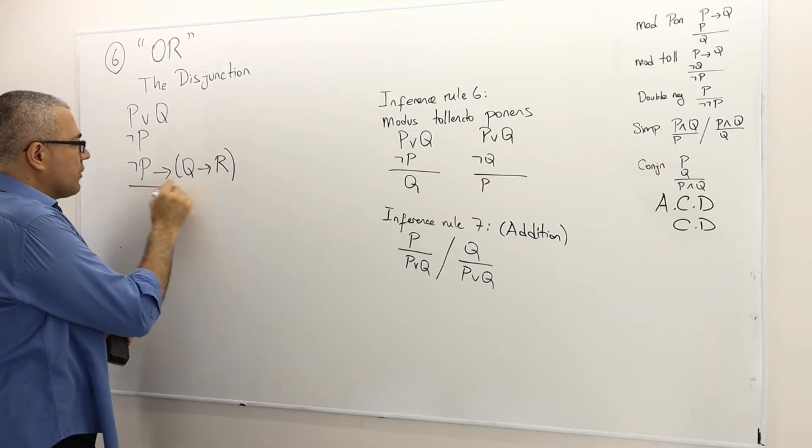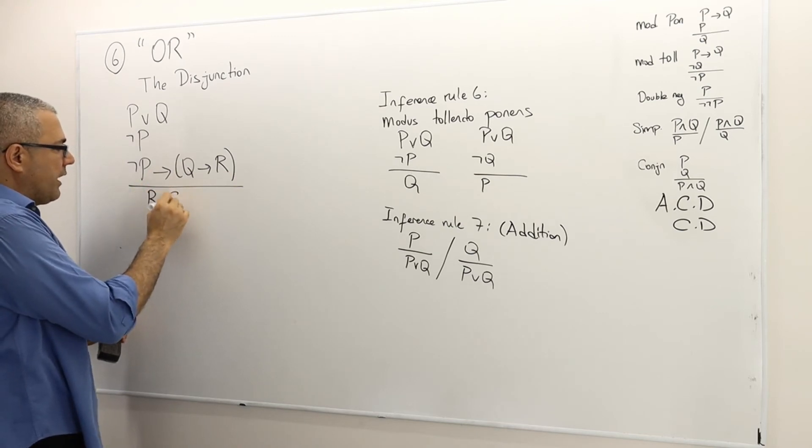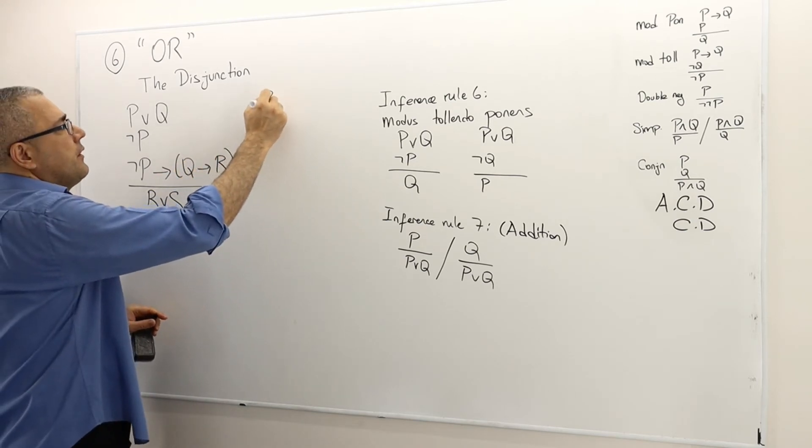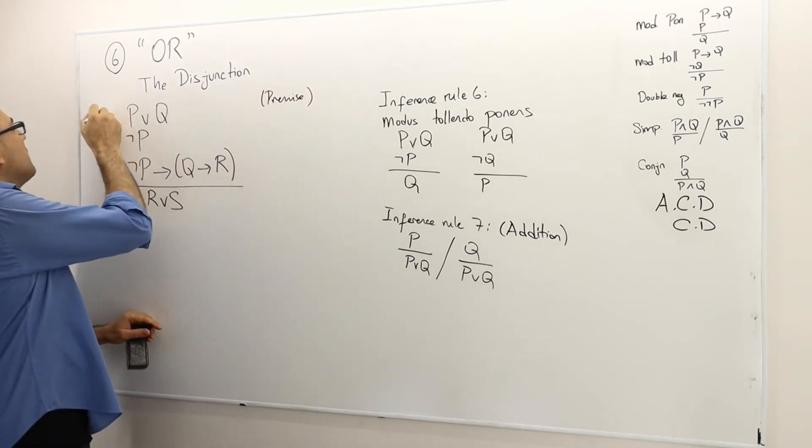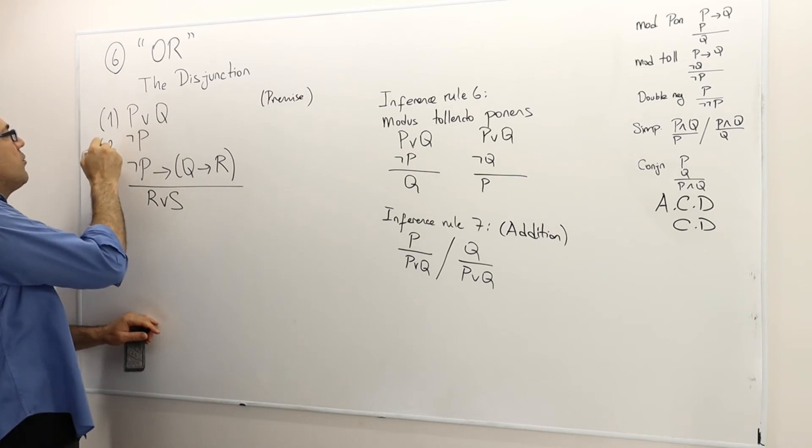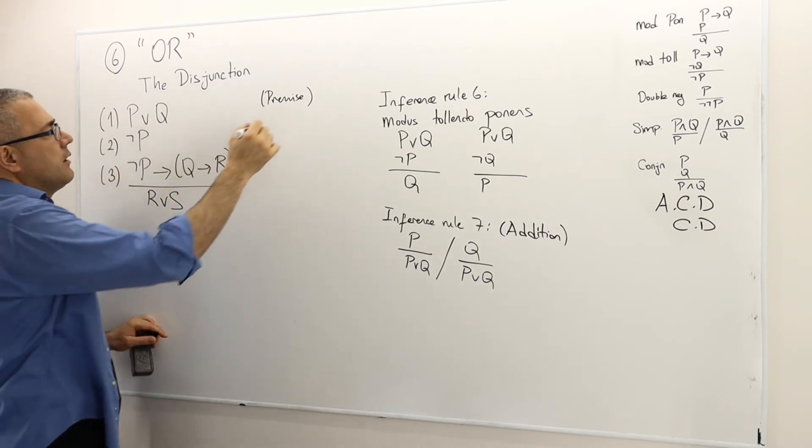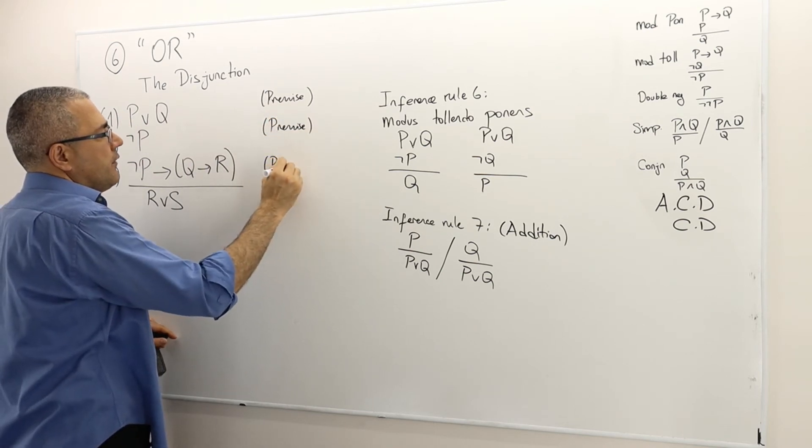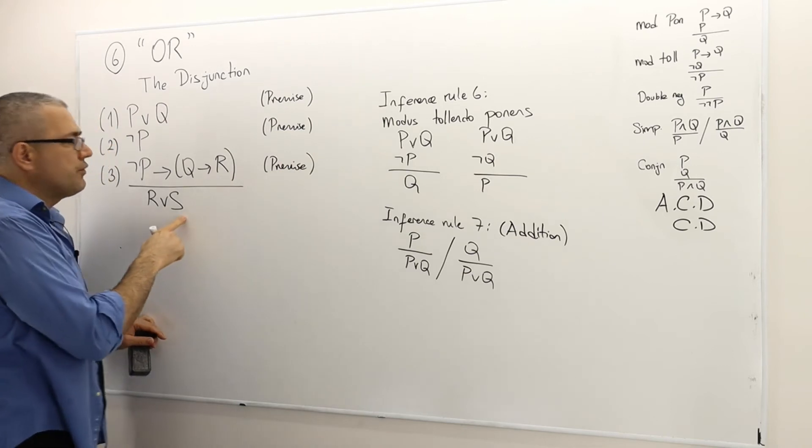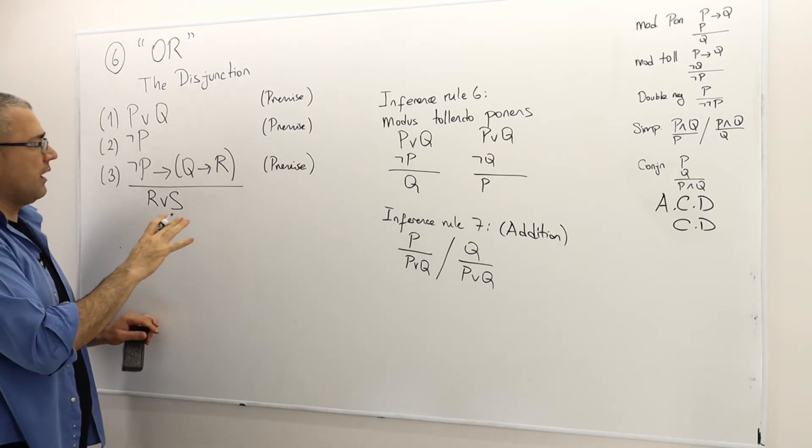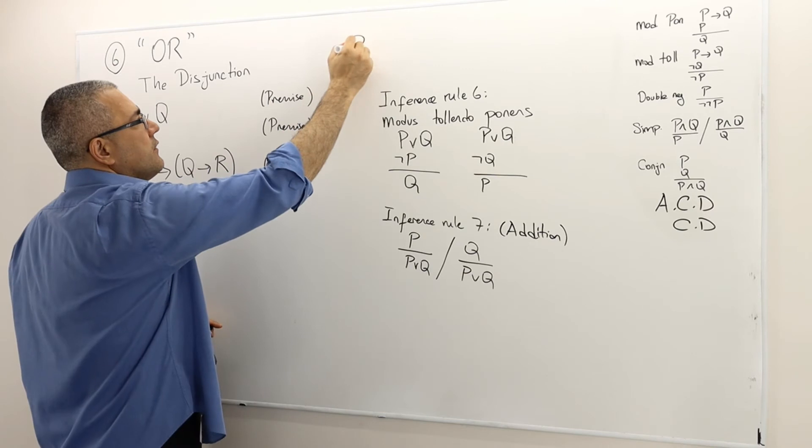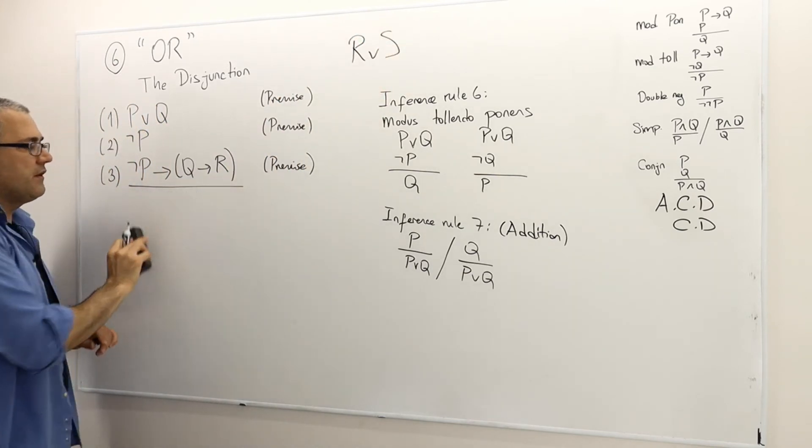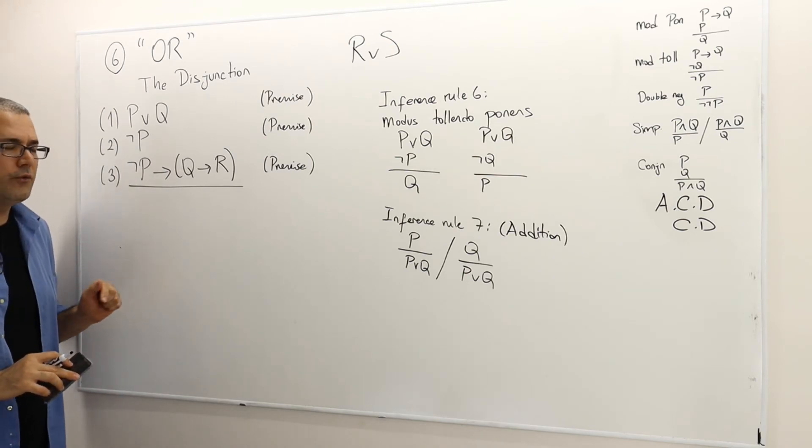And therefore, R or S. Let's number those so we can refer to them later. This is premise number one, this is premise number two, this is also premise number three. So I would like to reach to this conclusion. For that reason, I'm going to note it somewhere here so that I don't forget it. And I'm going to erase this part because I would like to continue my proof here.